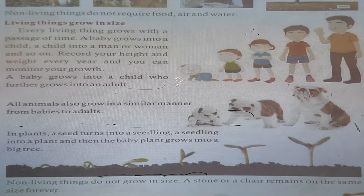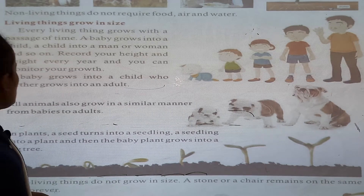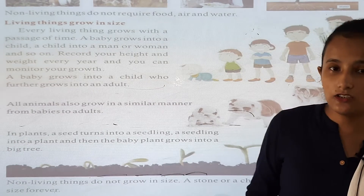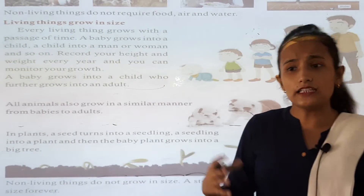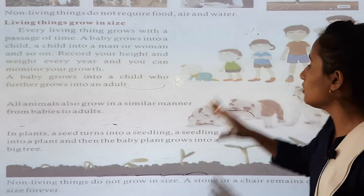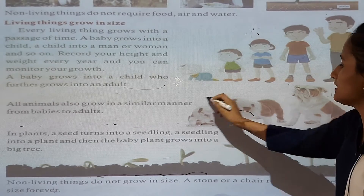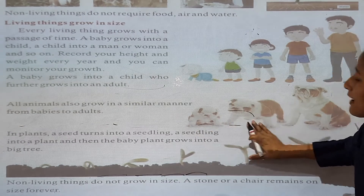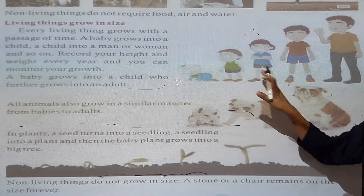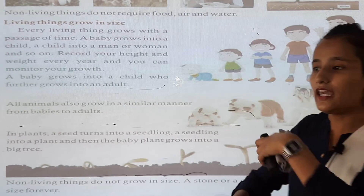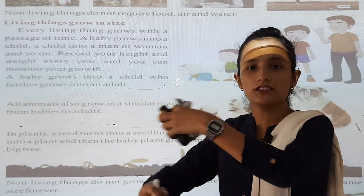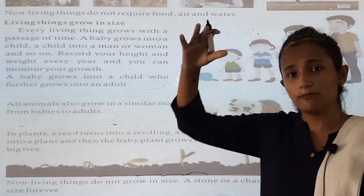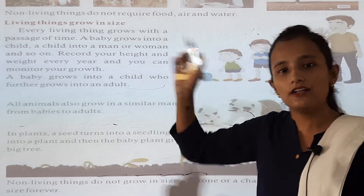All animals also grow in a similar manner from babies to adults. For example, this is a baby dog, and they are growing in their manner — baby, small baby, then big, and eventually an adult.